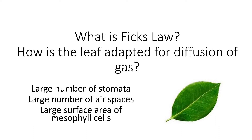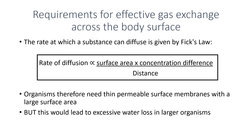In terms of how leaves are adapted, they have a large number of stomata, they have air spaces, and they also have a large surface area of mesophyll cells for gas exchange. Remember when it comes to Fick's Law we are talking about proportionality, not equal to. We can also talk about the fact that organisms are very thin, because if they're very thin we have a large surface area and a very small volume, and the difference in the surface area to volume ratio changes the rate of diffusion.